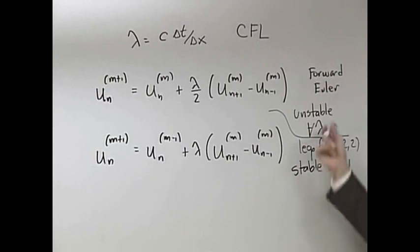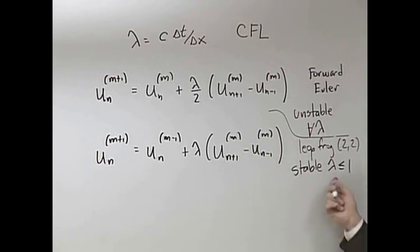Stable if it's less than one - if the CFL condition is less than one. Nice! So there's a huge difference between these two, because this one actually will work if lambda is less than one.